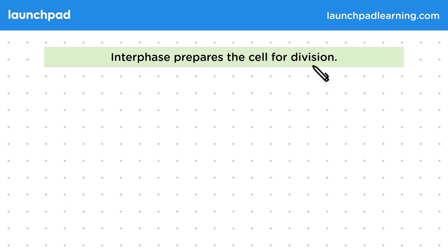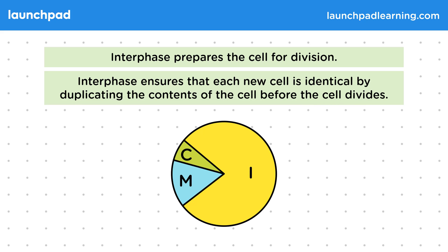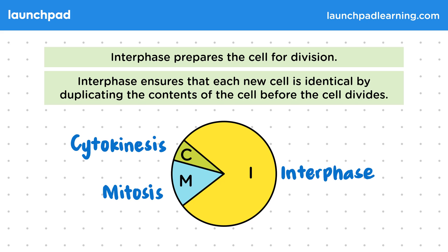Interphase prepares the cell for division. It ensures that each new cell is identical by duplicating the contents of the cell before it divides. Remember there are three stages in the cell cycle: interphase, mitosis, and cytokinesis. Interphase takes up the majority of the cell cycle — it's the stage the cell spends most of its time in. You are expected to be able to describe what happens to prepare a cell for division during interphase.